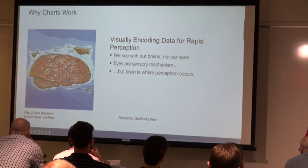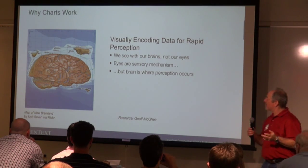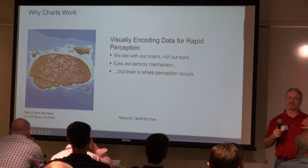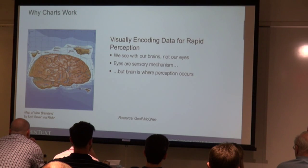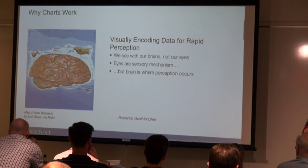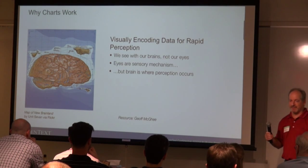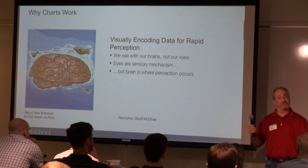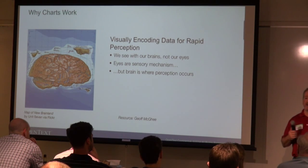The first topic is why do charts work. Visual encoding of data for rapid perception — we see with our eyes, but we comprehend with our brain. Even though the physical act is with our eyes, what we perceive is in our brains. Eyes are just a sensory mechanism, but our brain is where perception occurs. A classic example was that whole thing a couple of months ago with the blue/gold/black/white dress — our eyes saw one thing but in actuality it was something else. And that is the same thing with charts.